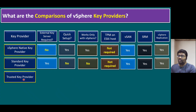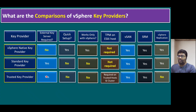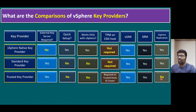The third option is Trusted Key Provider — meaning servers running with TPM devices. External keys required? Yes — for Trusted Key Provider, we must maintain a separate Trusted Key Host cluster. Quick setup? No — this is also not a quick setup. Works only with vSphere? No — Trusted Key Provider can also be used for other third-party devices. TPM on ESXi host required? Yes — this is the important point: TPM devices must be installed on the trusted host and cluster. VMware product support: vSAN is supported, Site Recovery Manager is supported, but vSphere Replication is currently not supported. We may expect support in a future release, but the current status is not supported.